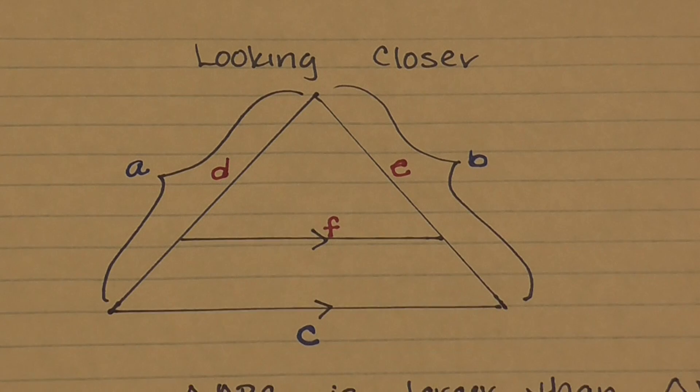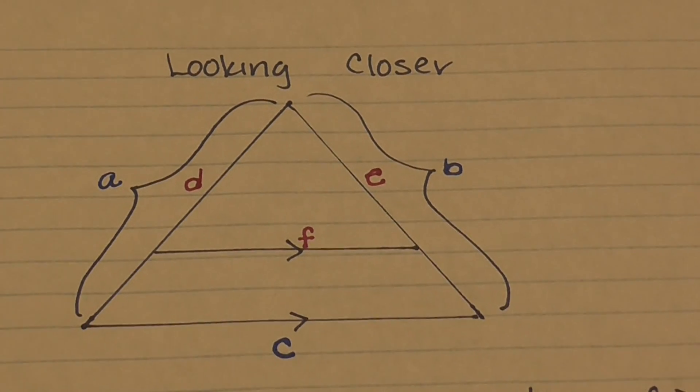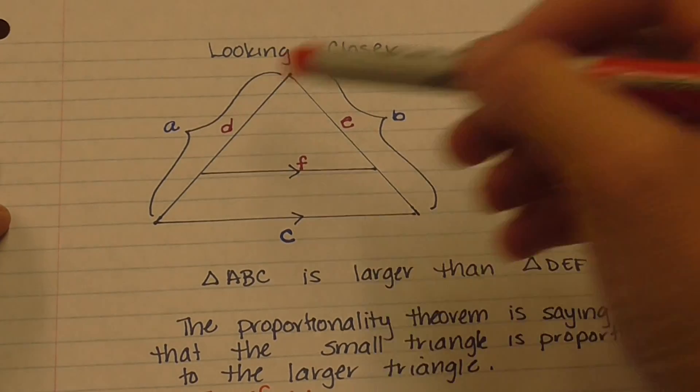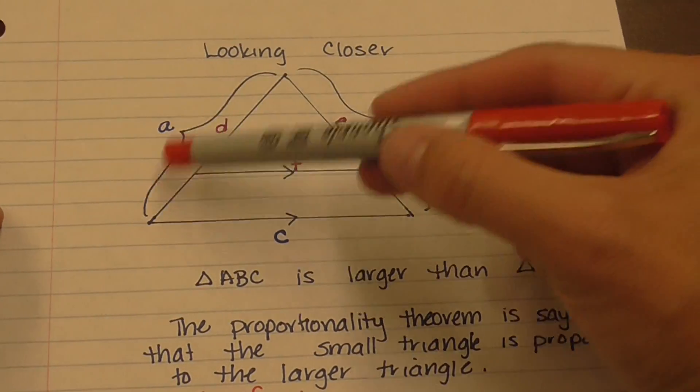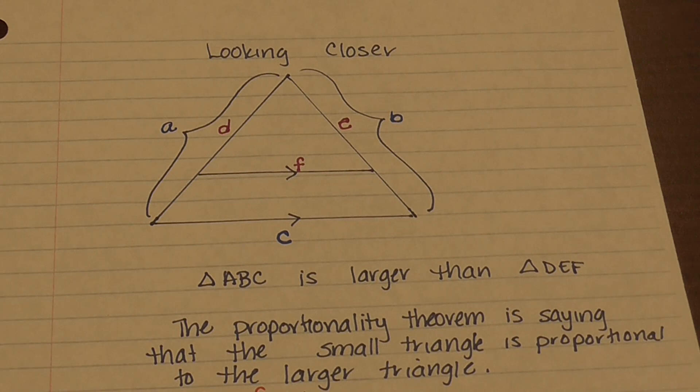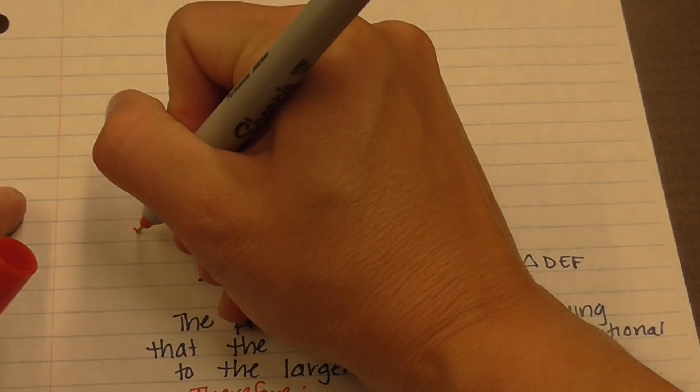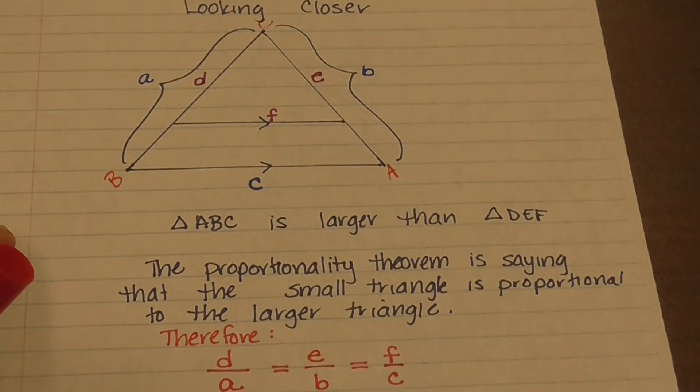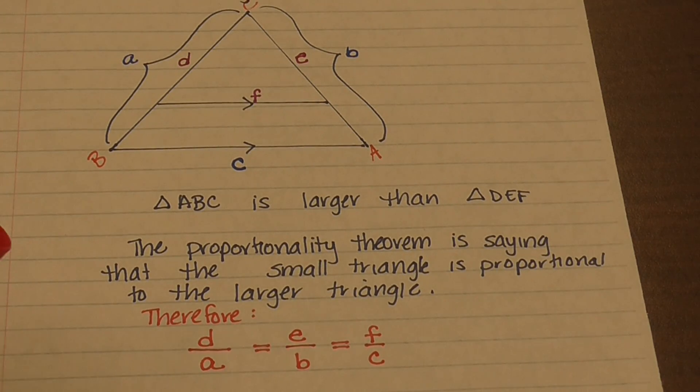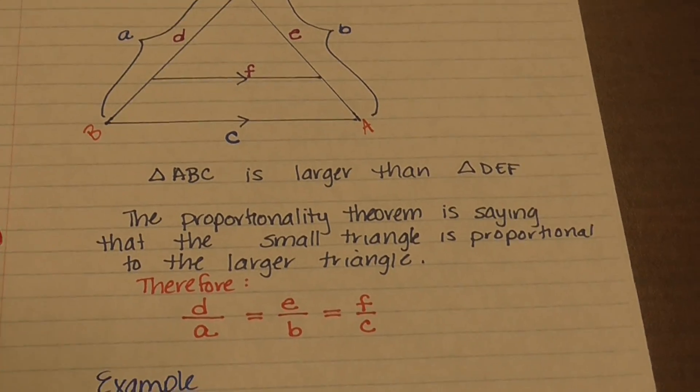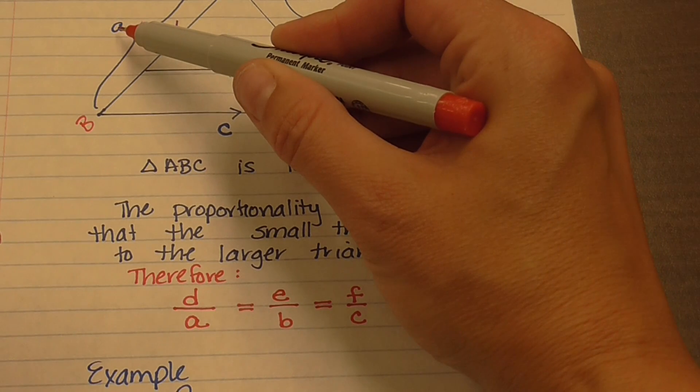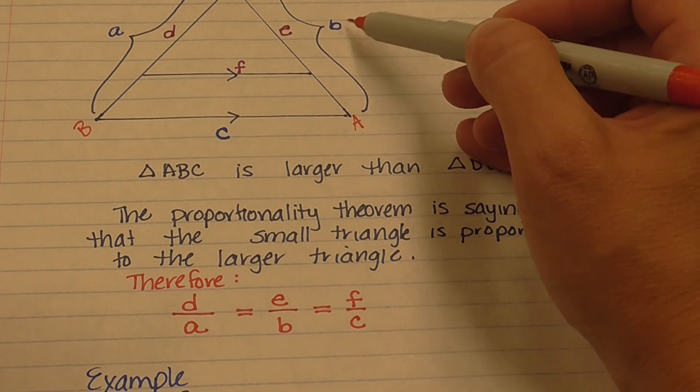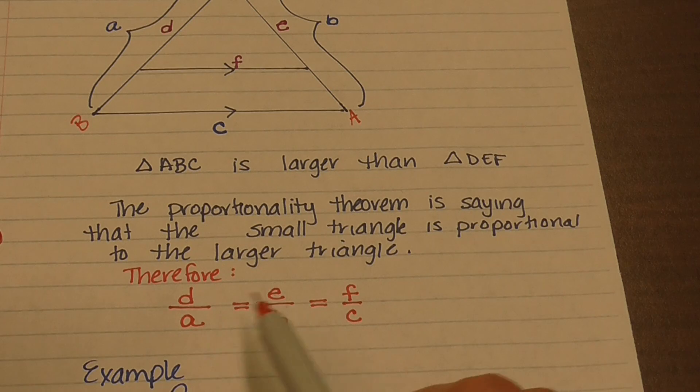Getting a closer look, we have this triangle here. Triangle ABC is the large triangle. ABC is the large triangle, and the small triangle would be DEF. The proportionality theorem is saying that the smaller triangle is proportional to the large triangle. Therefore, D is proportional to A, has the same ratio as E has to B, has the same ratio as F to C.